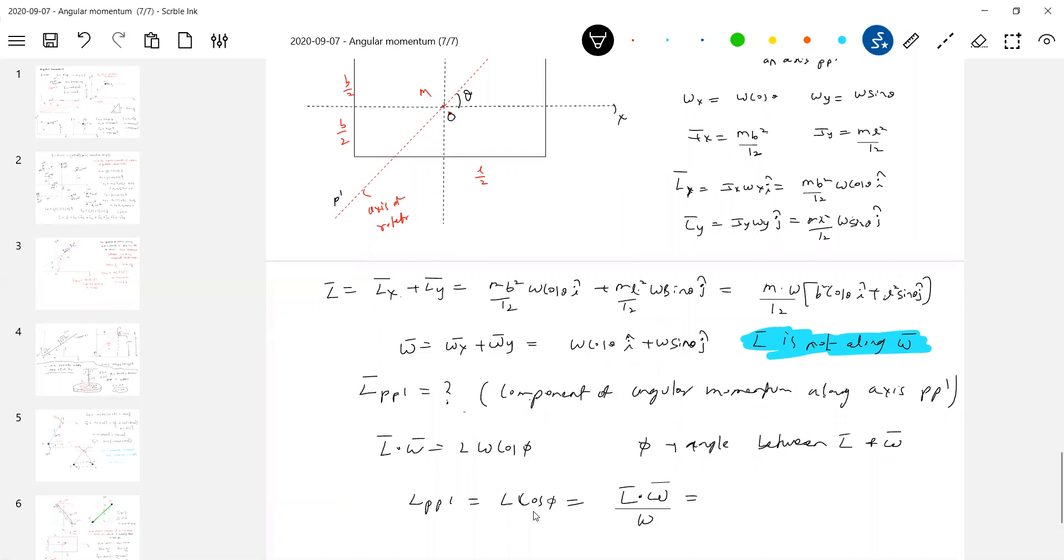So dot product says L bar dot omega equal to L omega cos theta. So what is needed? L cos phi. What is cos phi? Angle between L bar and omega bar. So what is L cos phi? Component of L bar along axis here. So therefore L PP dash should be equal to L cos phi, which should be equal to L bar dot omega bar by omega. L PP dash is not equal to L. That much I can see.